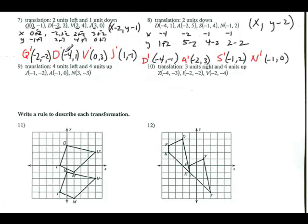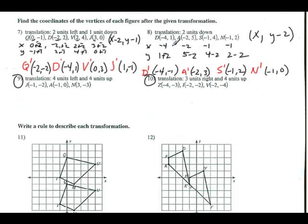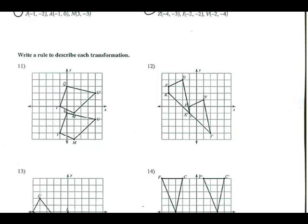I'm going to let you do problems 9 and 10 on your own, because it's important to be able to do this without my help sometimes. Just look at how I did the examples here — rewind and re-watch if needed. These are just like the first ones. For number 11, I'll go from Q to Q prime — moving straight up, so X stays the same. I'm moving up 1, 2, 3, 4 spots, so the rule is Y plus 4.